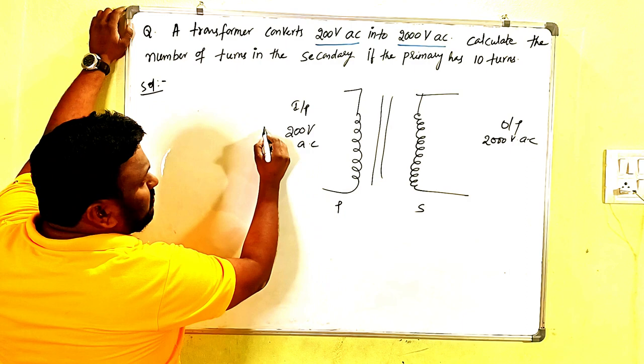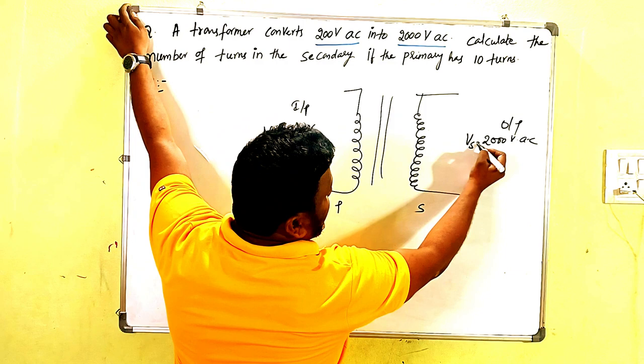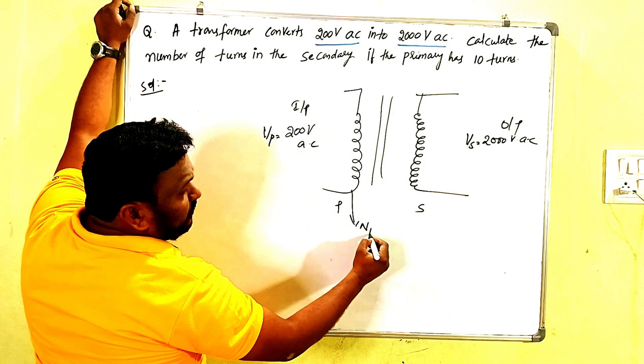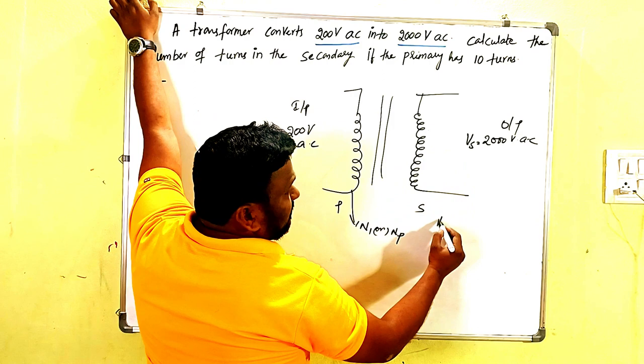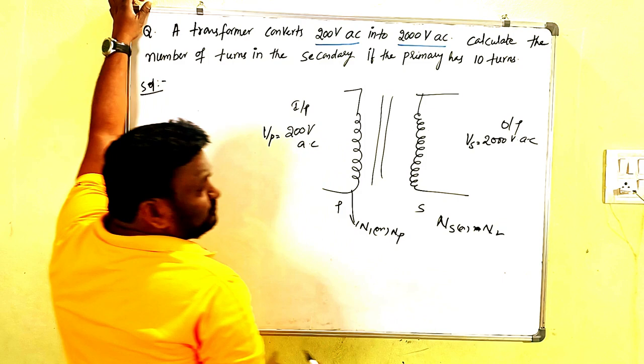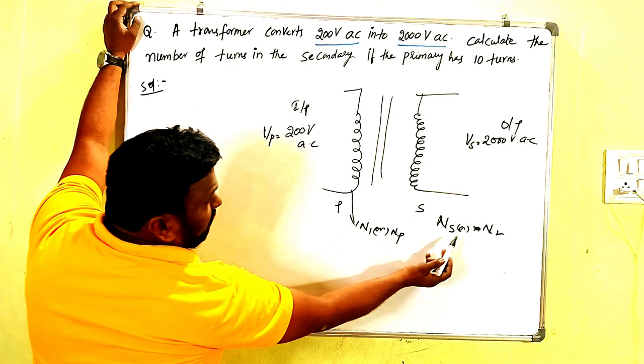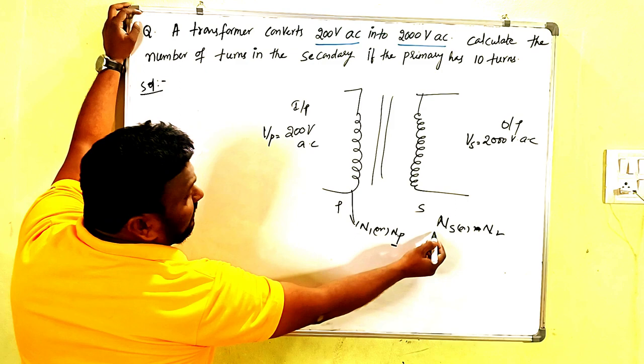So simply here I am going to say this is Vp, the primary voltage, and this is the secondary one Vs. And here number of turns in the primary coil is N1 or Np, your choice, and this is N2 or Ns. What is N1? Number of turns in the primary coil. And what is N2? Number of turns in the secondary coil. You can represent like this, Np and Ns also.